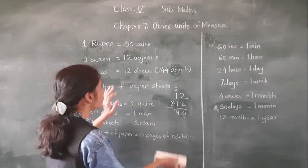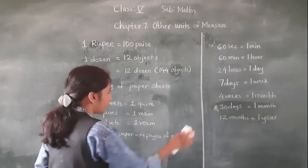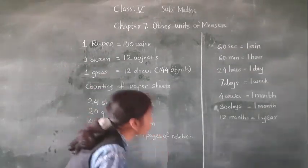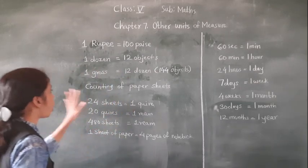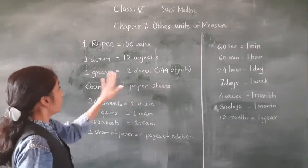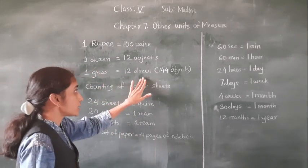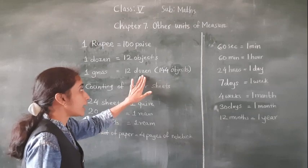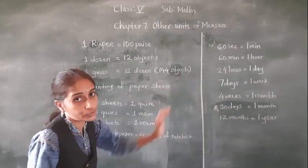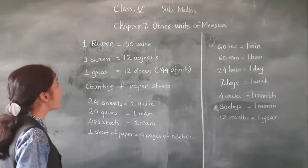So in 1 gross how many objects do we get? 144 objects. So 1 gross means 12 dozen, and that means 144 objects.